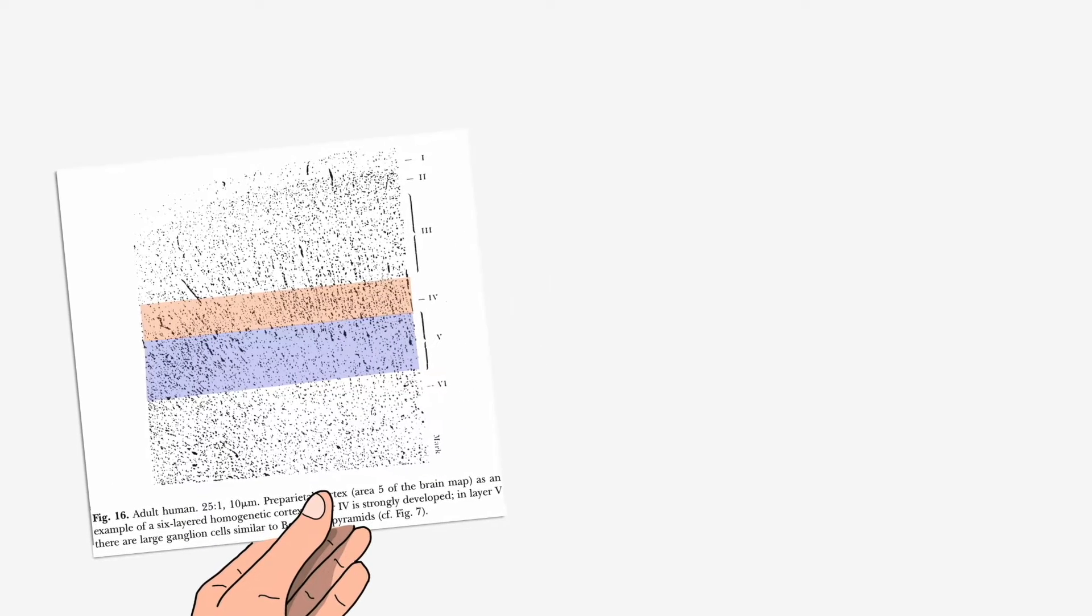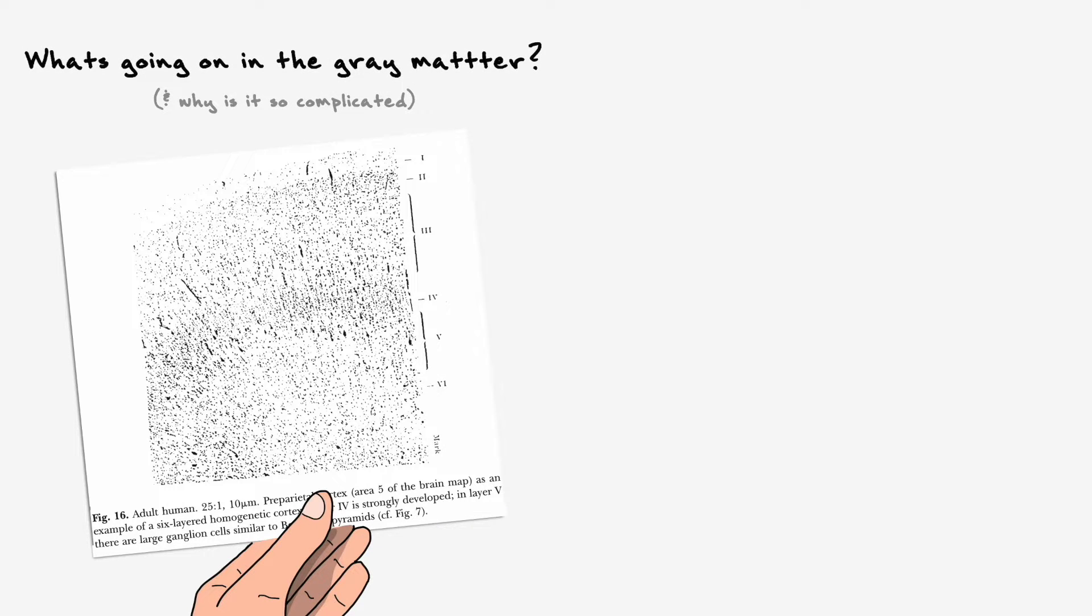Now obviously from this conversation, we haven't even scratched the surface of what is actually happening in the cortex because there are so many layers of complexity that make the study of the neocortex such an interesting but complex field. Many of the reasons why the study of the grey matter is so complex has to do with the properties of the neurons themselves.